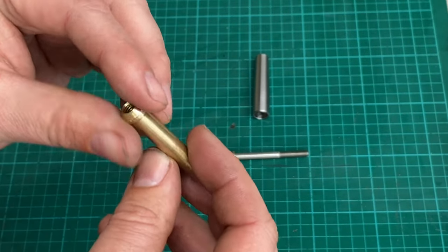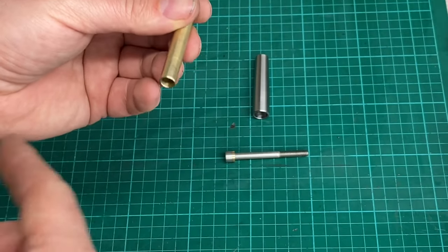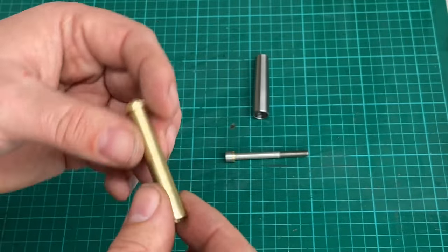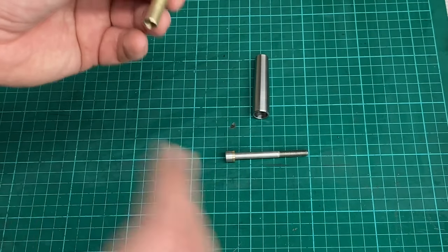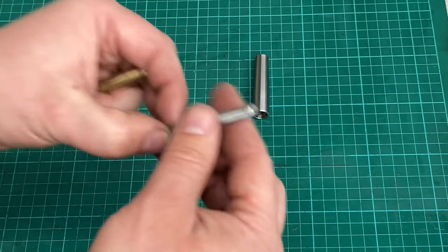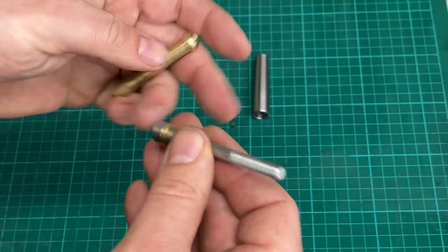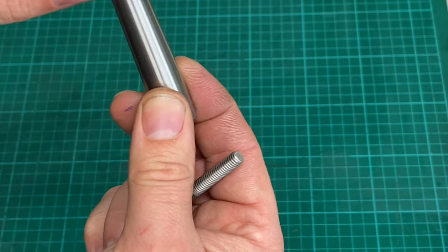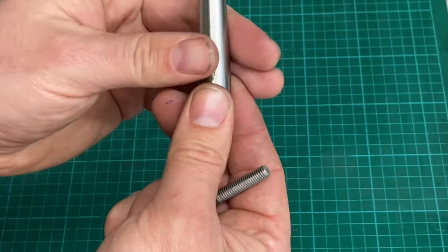So I sprayed it all out with WD-40, blew it all off with the airline, gave it a really good clean and made sure that everything went back together really nice and clean. And then you don't get any grittiness and everything feels nice and smooth when it's all operating.